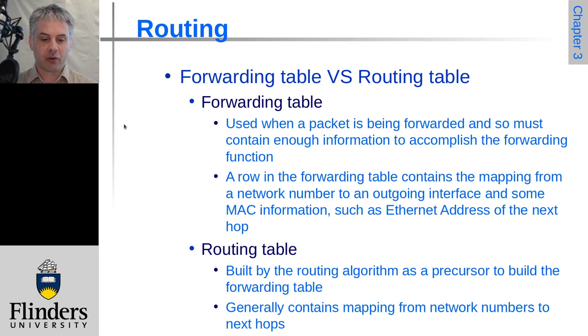So we can have a forwarding table and a routing table. A forwarding table has the information required to do the forwarding. It contains the mapping number for the particular interface concerned and the network number, and it will contain the information of where to get to the next hop. So typically that will be the physical layer address of where to send the packets to. The routing table on the other hand is built by the routing algorithm and is used to generate the forwarding table.